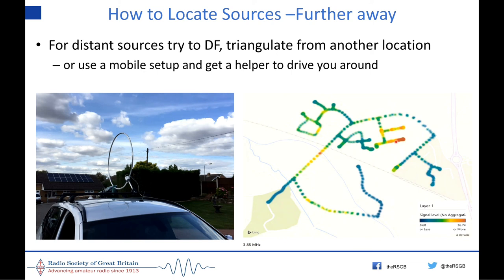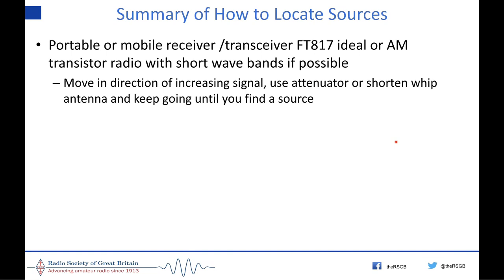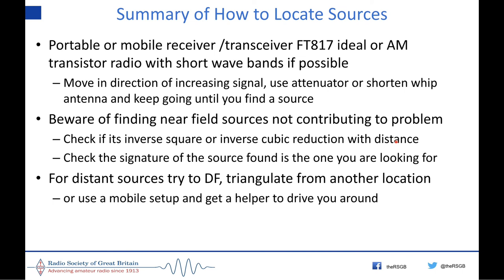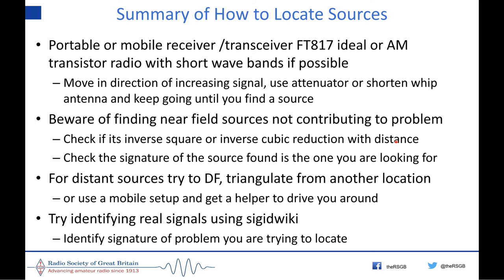For distant sources you can also triangulate with a loop. In summary: use something portable, look for an increase in signal doubling 3 dB or 6 dB every time you halve the distance, or going up as the cube of the distance for near-field. Look out for near-field sources because you'll think you've found it when you haven't. For distant sources, use the loop to direction-find or triangulate. Use SIGID Wiki to identify real signals — you don't want to track them down and claim they're interference.